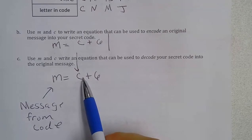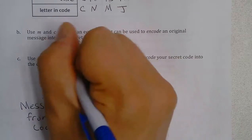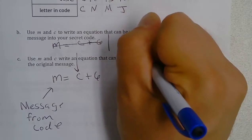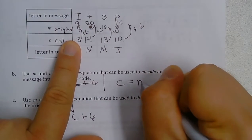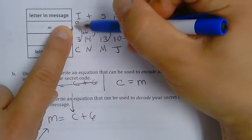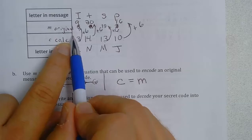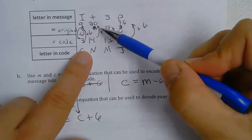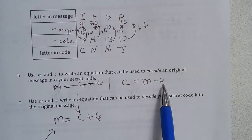So my input here is my code number, and my output is the message number. But if I wanted the code number from the message number, I work backwards — how do I get from 9 to 3? I subtract 6. And that works for the other ones: 20 minus 6 is 14, and so on. So my coded number is the message number minus 6, meaning C = M - 6.